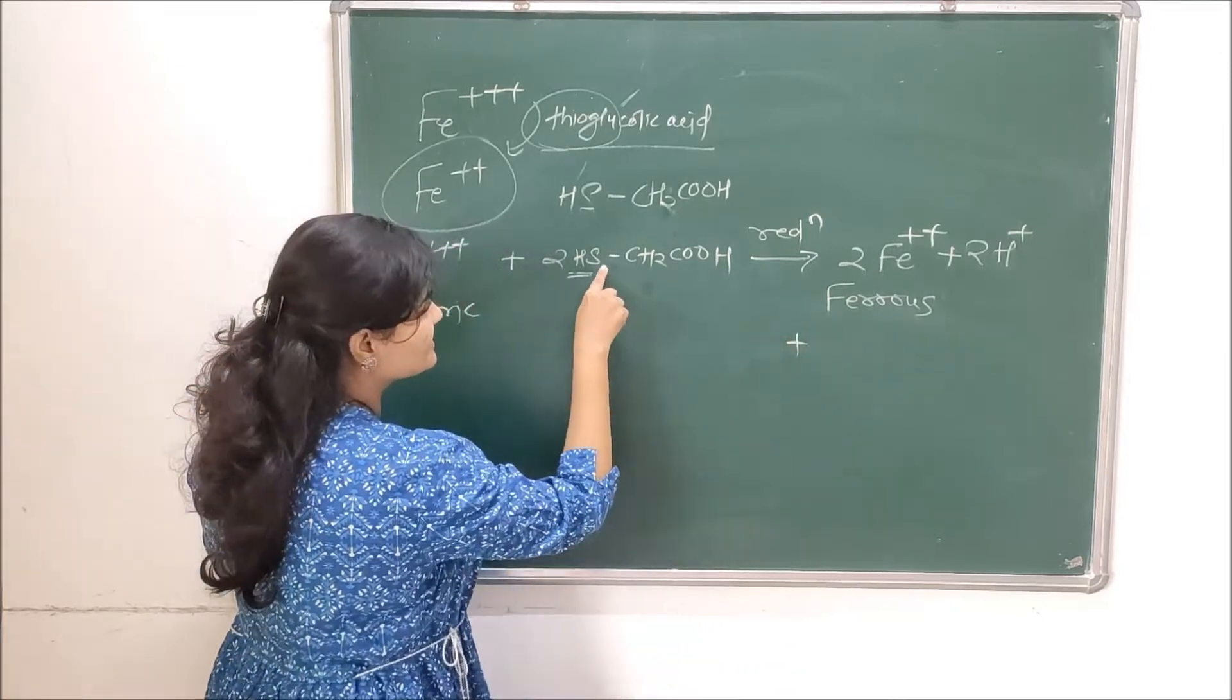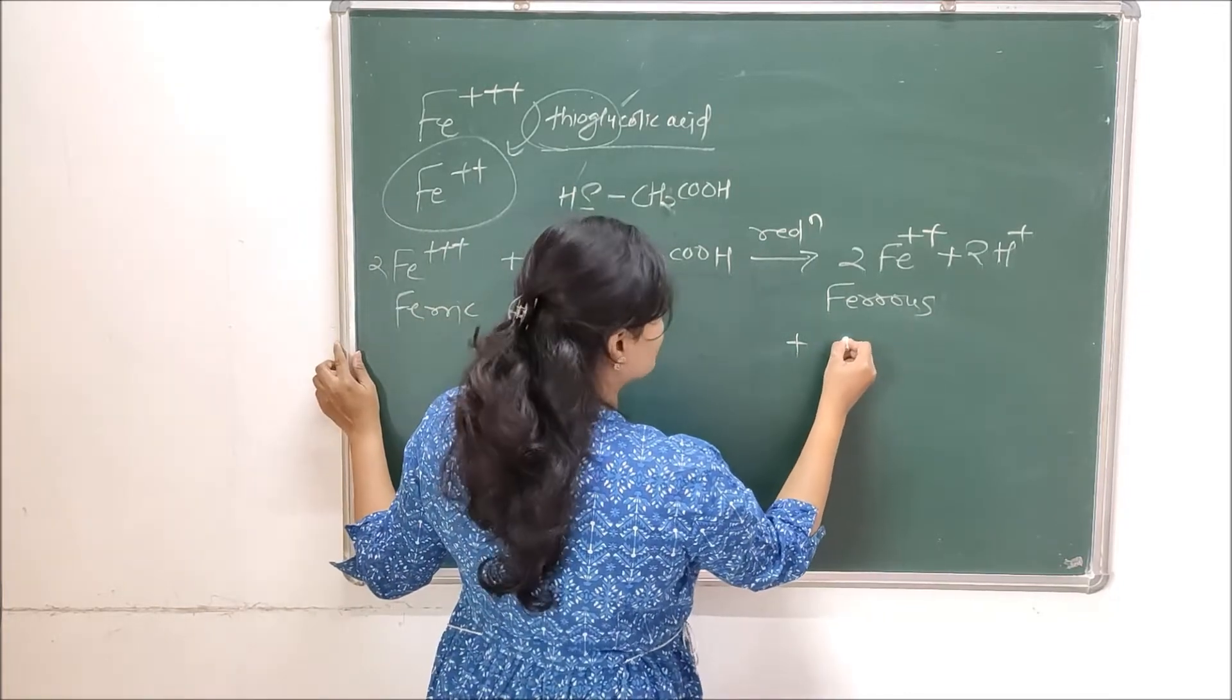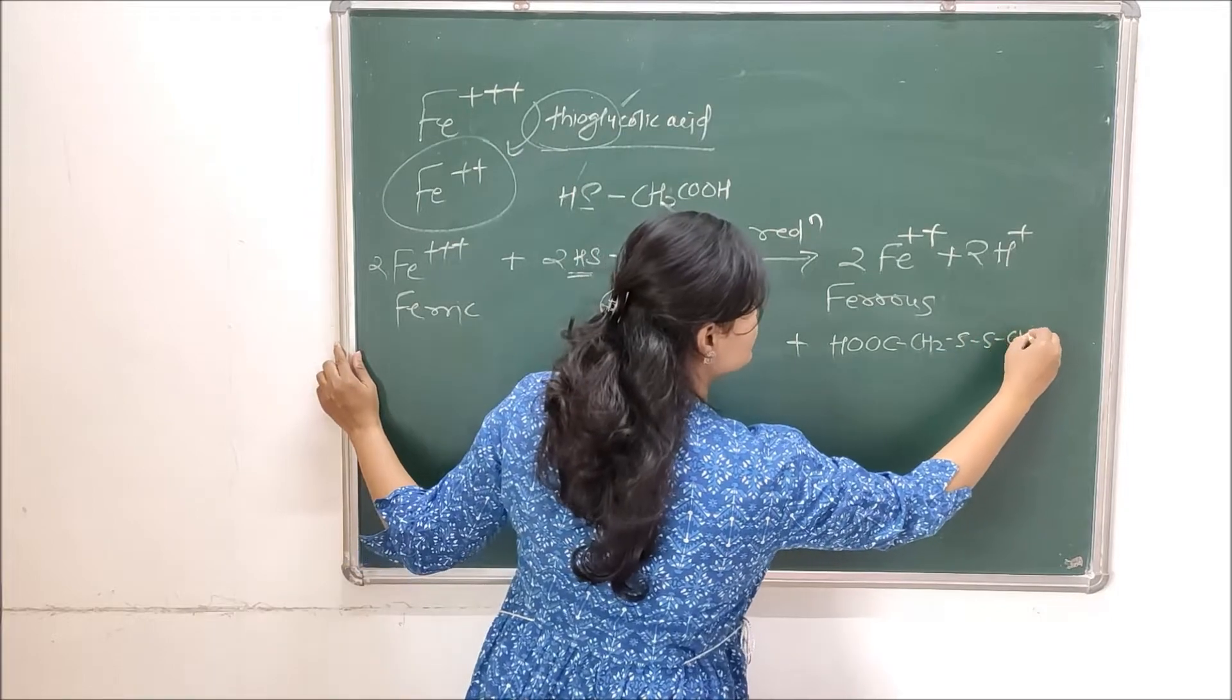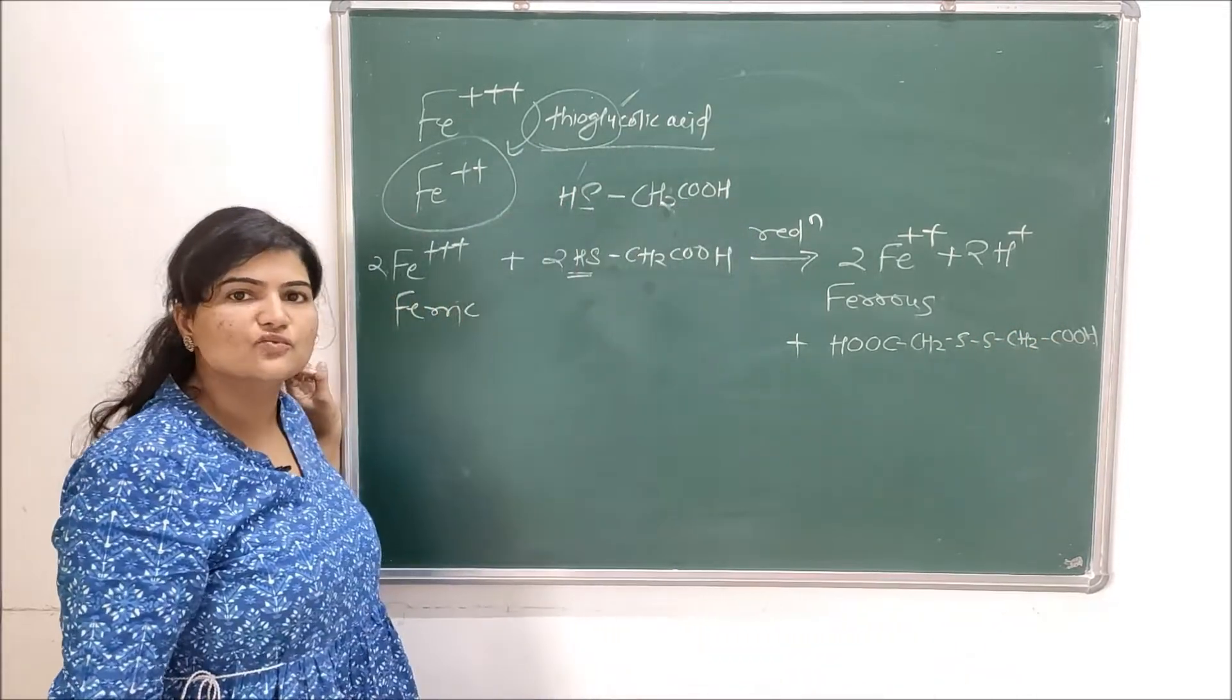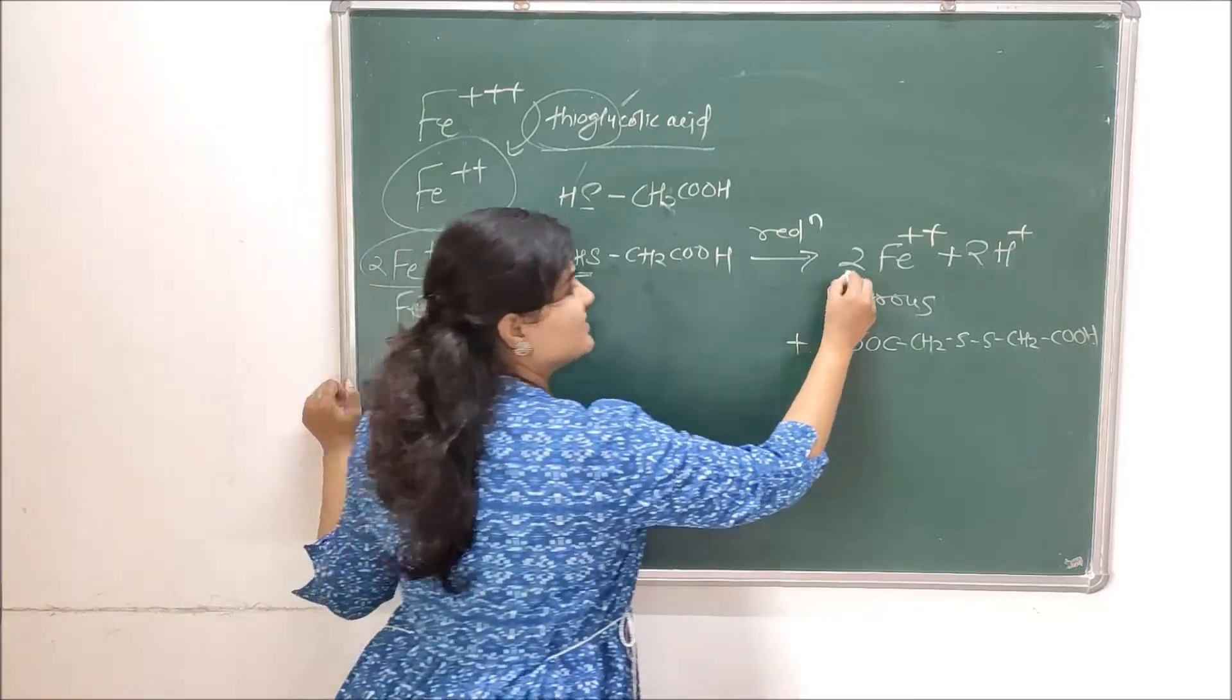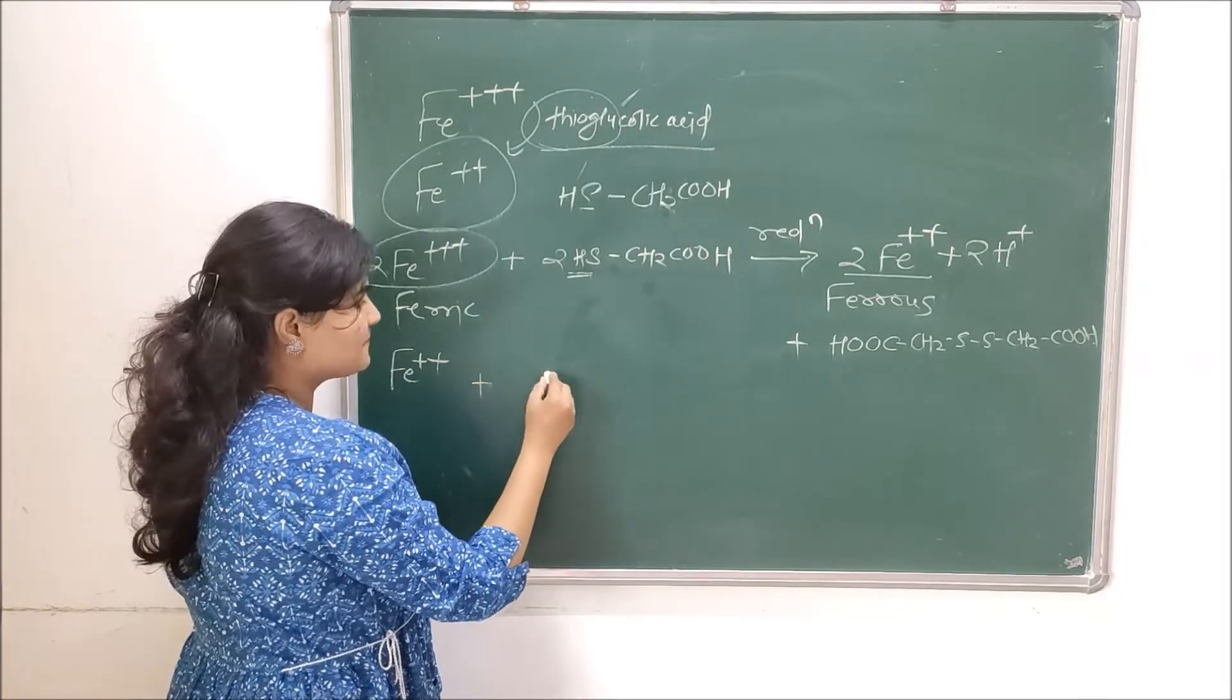And in this process what you will get is something like this. Now this portion is remaining and there are two such parts, so what you will get is COOH-CH₂-S-S-CH₂-COOH. This is what you are going to get for the first reaction if you are starting out with ferric ions.